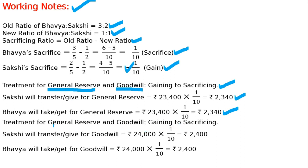Now I will tell you about goodwill. Transfer for goodwill: goodwill is valued at 24,000. 24,000 into 1/10 — the sacrificing partner's capital account will be credited. Bhavya will receive for goodwill 24,000 into 1/10, which is 2,400. This is the gaining share — not old ratio, not new ratio, but the net gaining or sacrificing share.